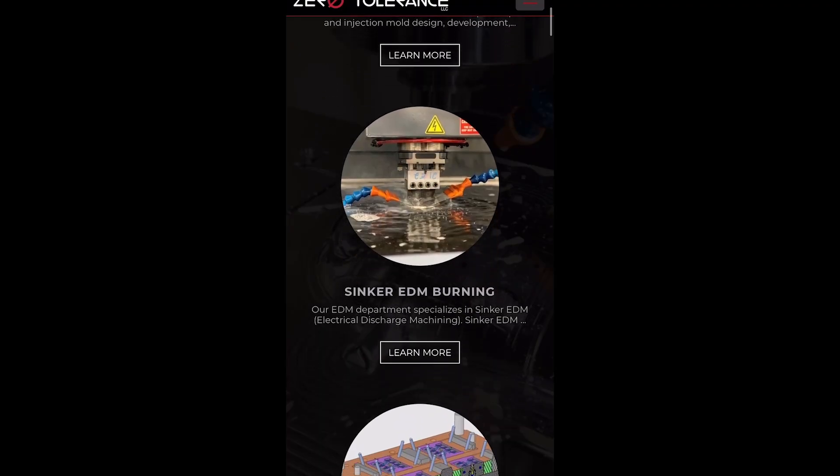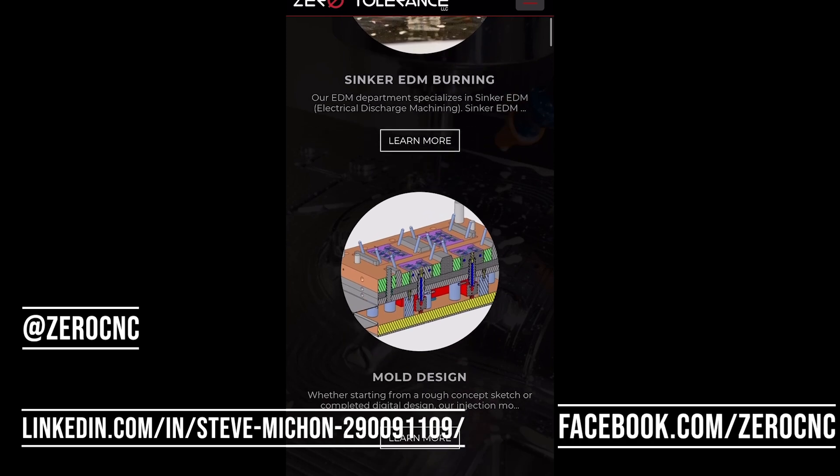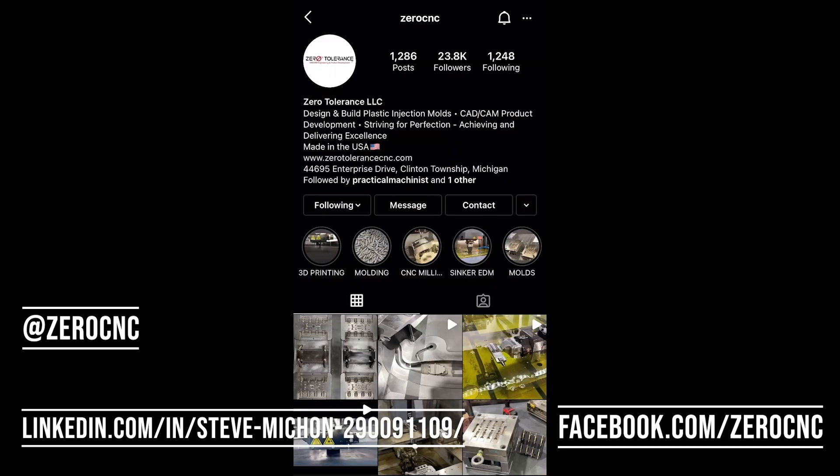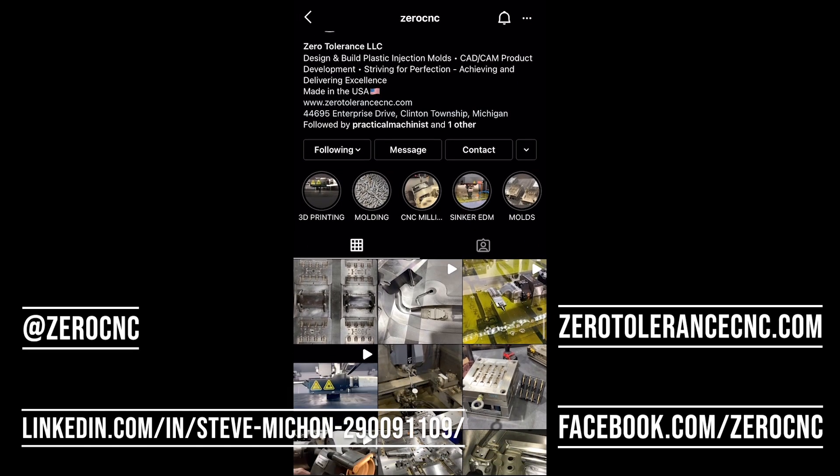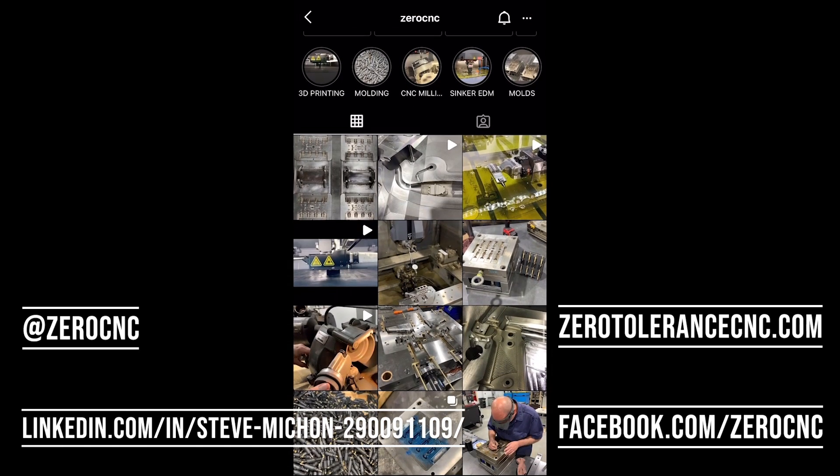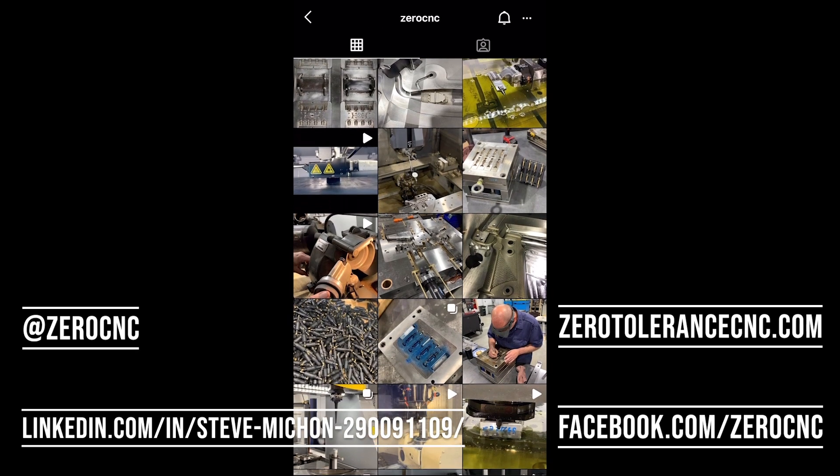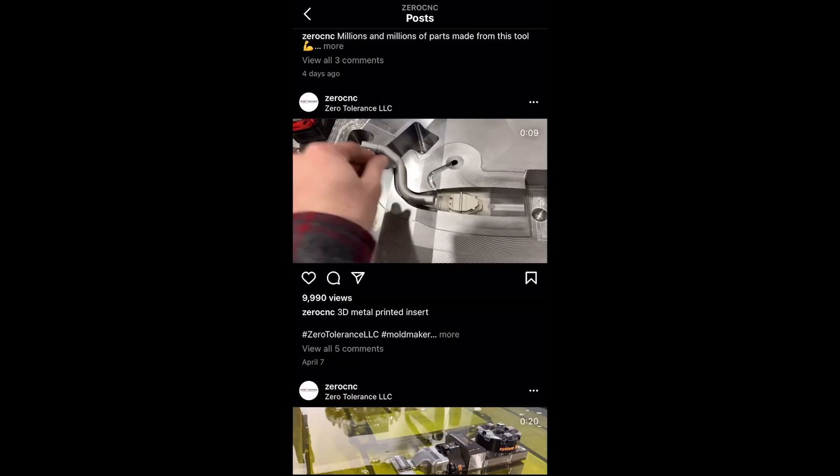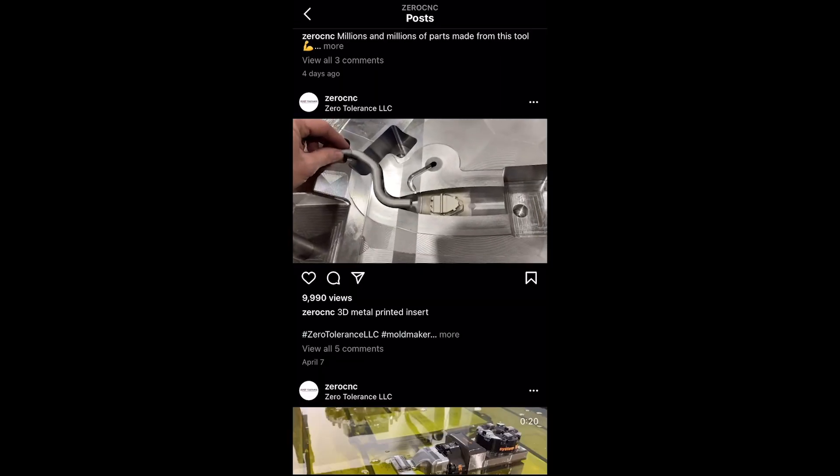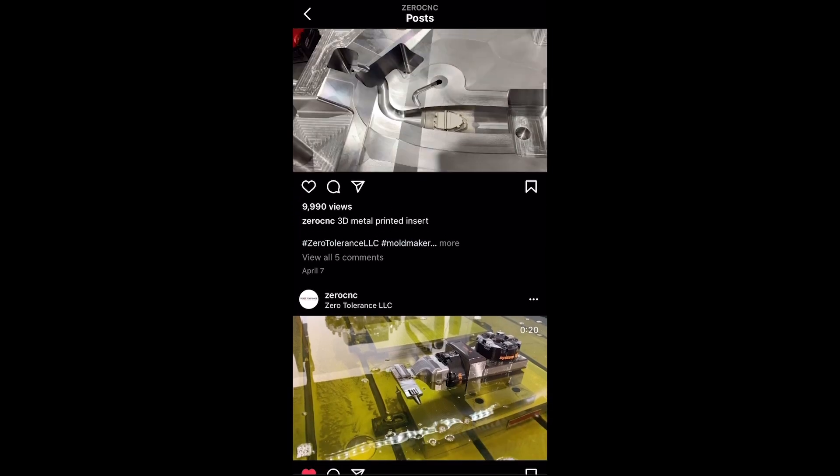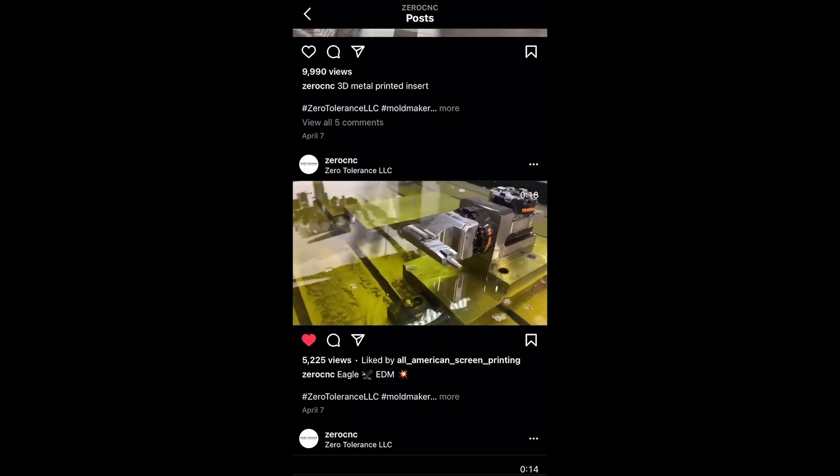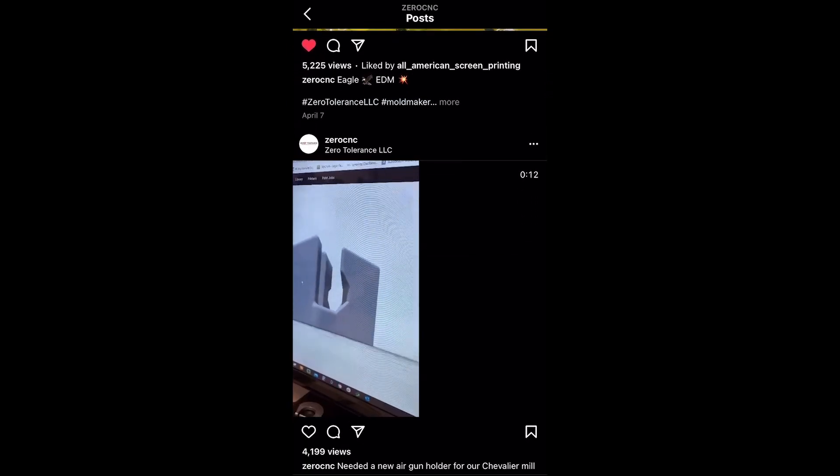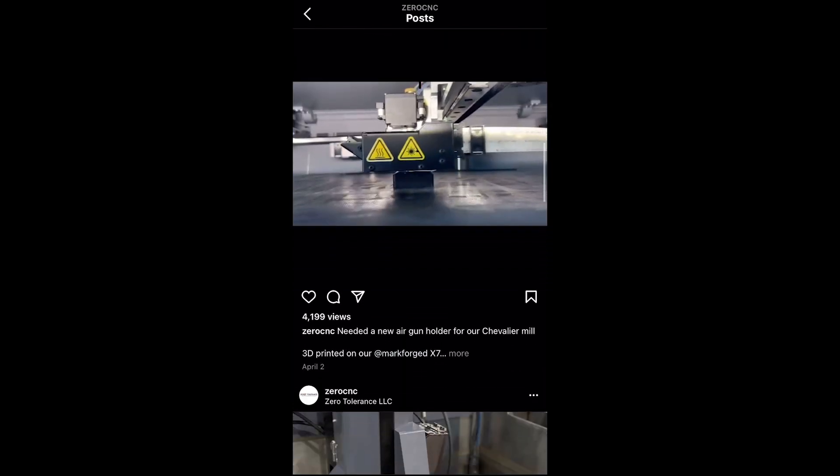You can find Zero Tolerance on LinkedIn, Instagram, Facebook, and also our website, obviously. Social media seems to be a very powerful tool from what we've found. We have posted our work and more information about what we do, and we've seen a lot of traction from it. It's a very powerful tool. Everyone's looking at their phones today and I think that it's overlooked as a way to grow your business.